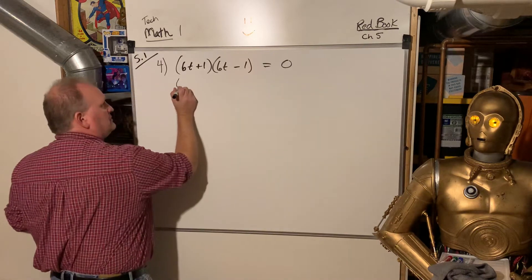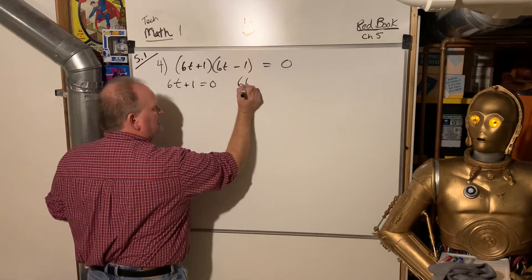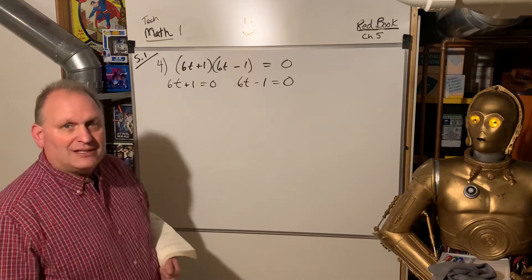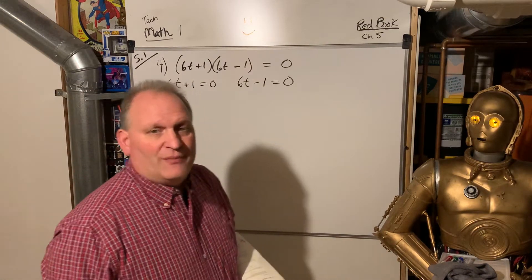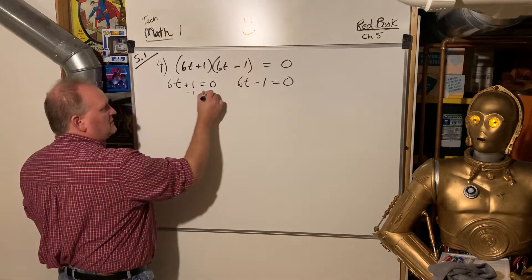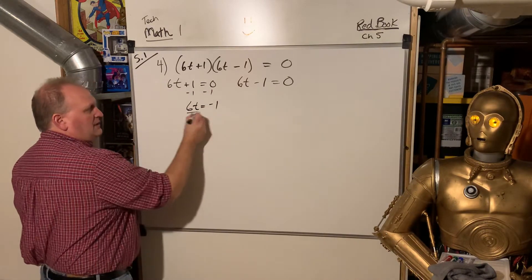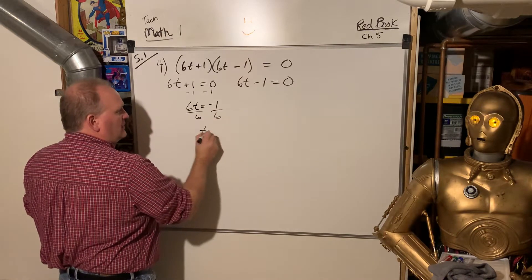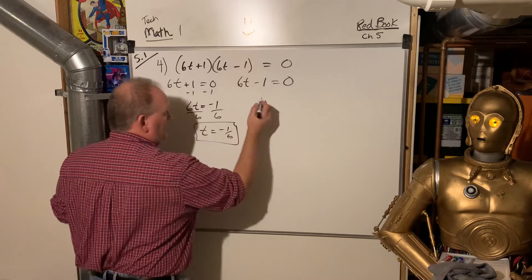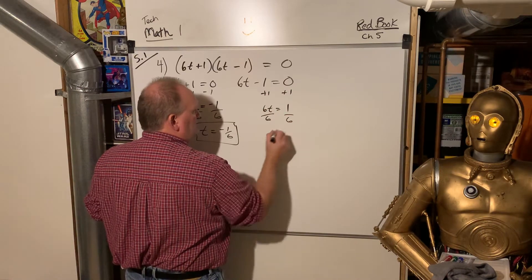So what we do here: we take (6t + 1) and set it equal to 0, and (6t − 1) and set that equal to 0, and now we go back and solve these two-step equations. Remember, isolate the variable — get t all by itself. Subtract 1: 6t equals negative 1, and divide by 6. So one answer is negative one-sixth, and the other answer is positive one-sixth.